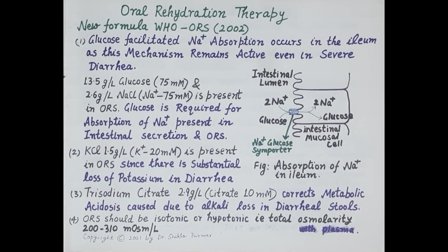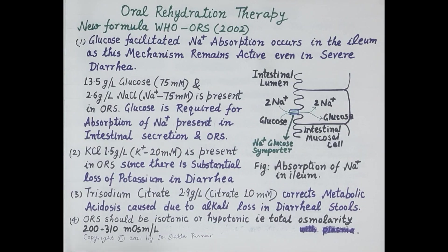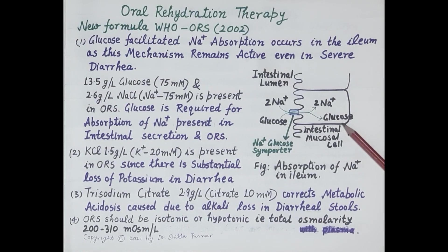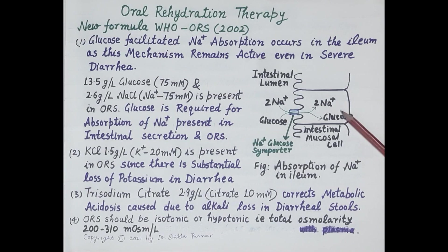Therefore, 13.5 g per liter of glucose and 2.6 g per liter of sodium chloride are added to the ORS. Glucose is required for the absorption of sodium — sodium cannot be absorbed in the absence of glucose. So absorption of sodium ions is mediated by absorption of glucose, and therefore glucose and sodium chloride are both added to the oral rehydration solution.